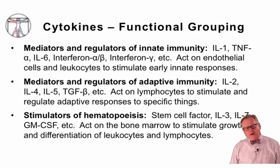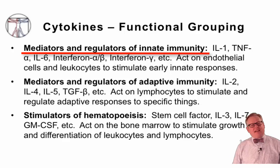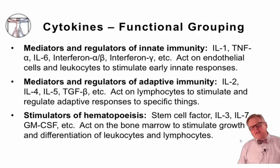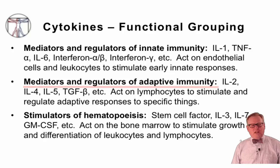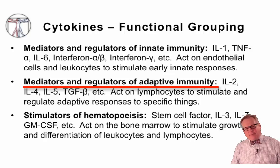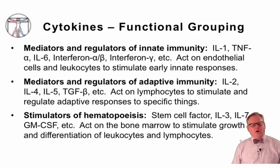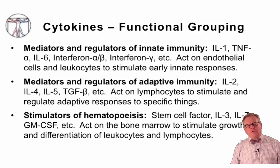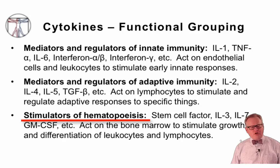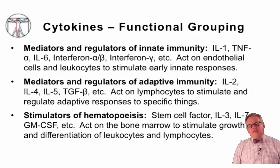In terms of functional grouping of cytokines, there are three major groups. First, cytokines that mediate and regulate innate immunity — things like interleukin-1, tumor necrosis factor, and IL-6 — which act on endothelial cells or leukocytes to stimulate early innate immune responses. Second, cytokines that mediate or regulate adaptive immune responses, such as interleukin-2, -4, -5, and transforming growth factor beta, which cause lymphocytes to grow, develop, and generate immunologic memory. Third, cytokines that stimulate hematopoiesis — like stem cell factor, interleukin-7, and GM-CSF — which act on the bone marrow to stimulate growth and differentiation of leukocytes and lymphocytes.